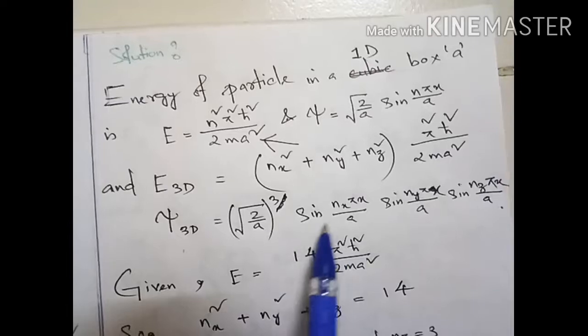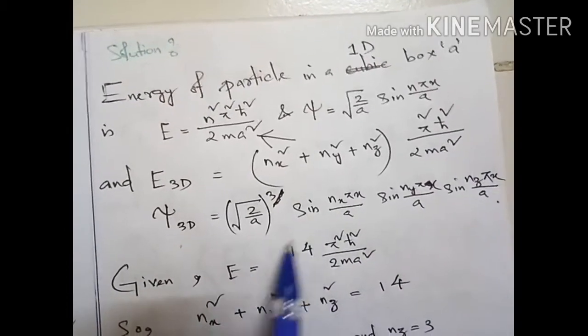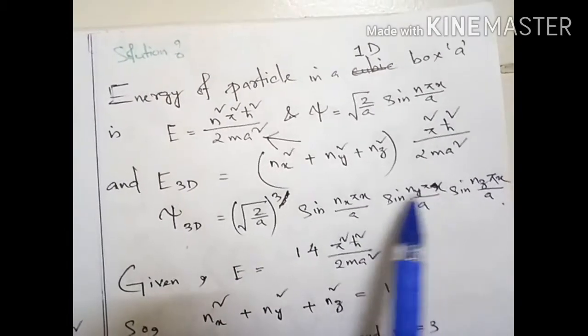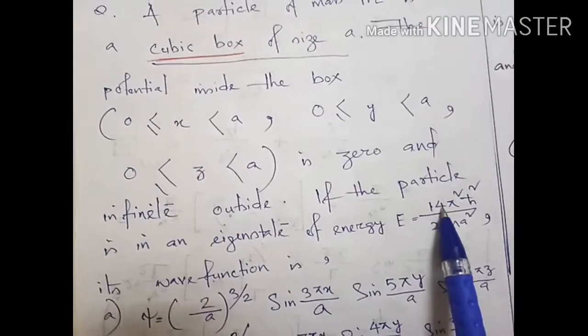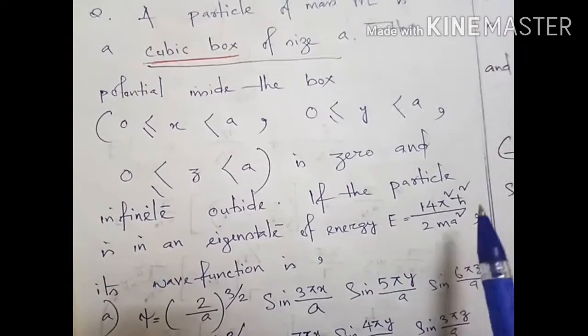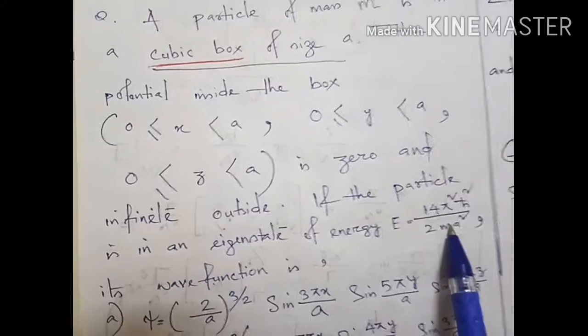From the question, we have the energy value is given as 14π²ℏ²/(2ma²). So for a cubic box, the energy is this much.